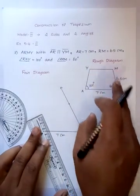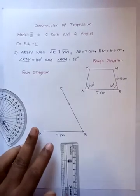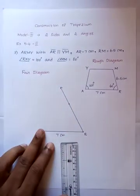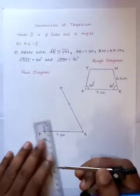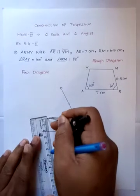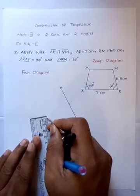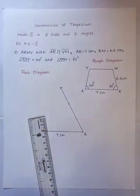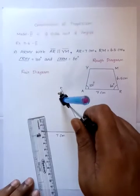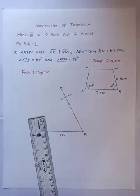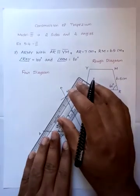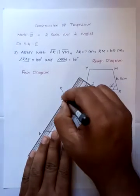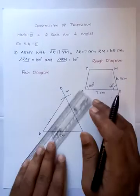Mark point M on the line segment from R. Measure six point five centimeter using the compass. So, 6.5 cm is measured, we mark the point M at 6.5 cm distance from R. Mark the diagonal and the triangle is complete. Join A and M.